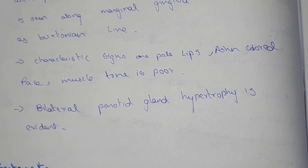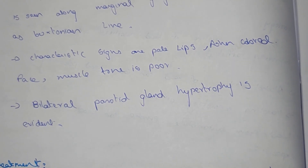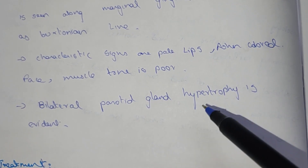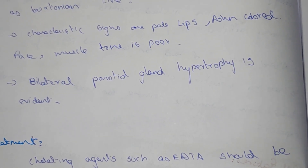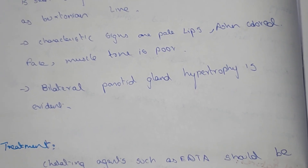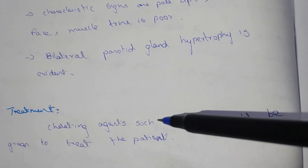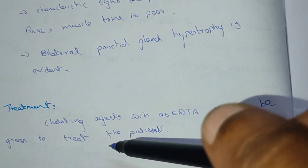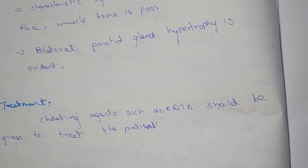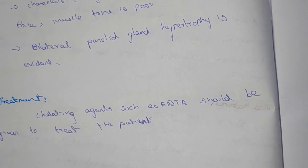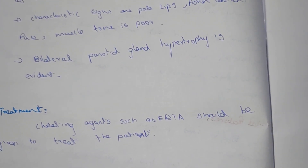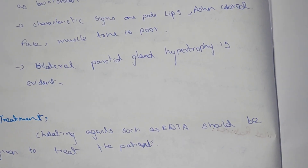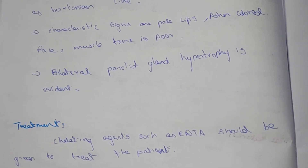Bilateral parotid gland hypertrophy is evident. Treatment involves chelating agents such as EDTA, which should be given to treat the patient. This concludes the overview of lead poisoning.